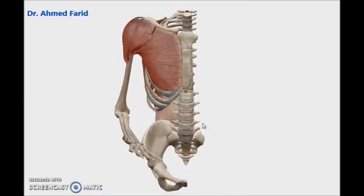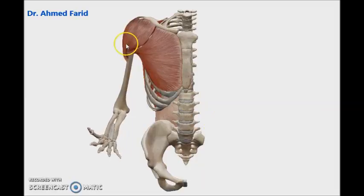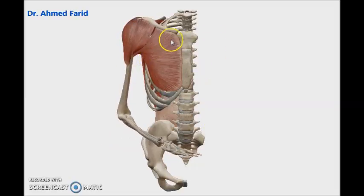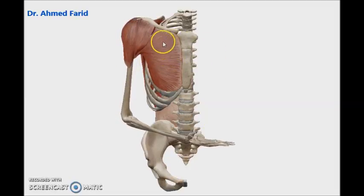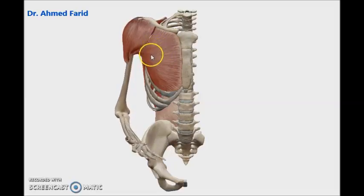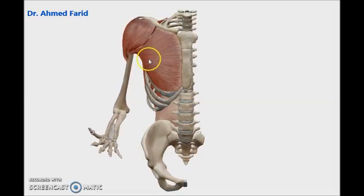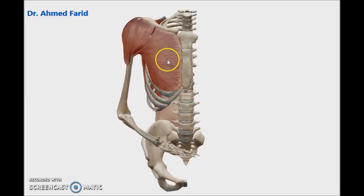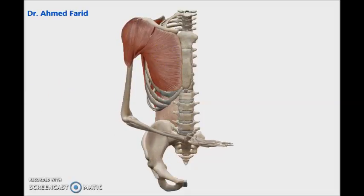If you remember that any muscle attached to the front of the upper part of the humerus will make medial rotation — for example, pectoralis major and latissimus dorsi that we saw in other videos, and here we also have subscapularis. So the action will be medial rotation of the humerus at the shoulder joint. The muscles performing this medial rotation are pectoralis major, subscapularis, latissimus dorsi, and the anterior fibers of deltoid.